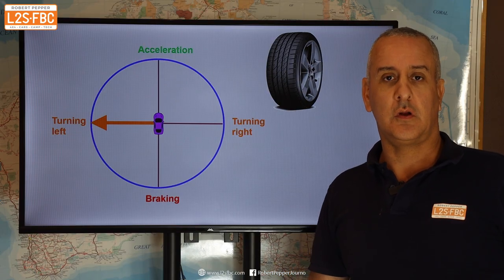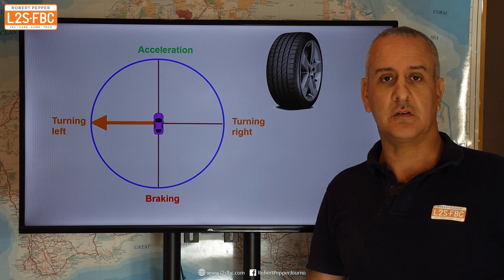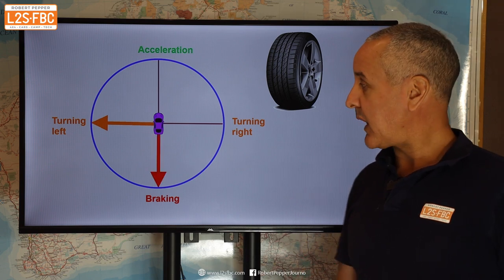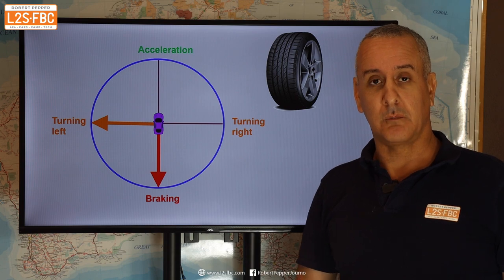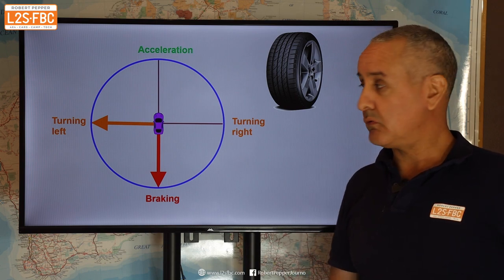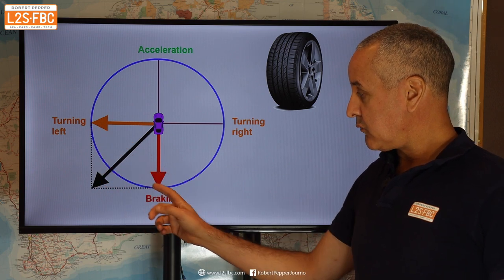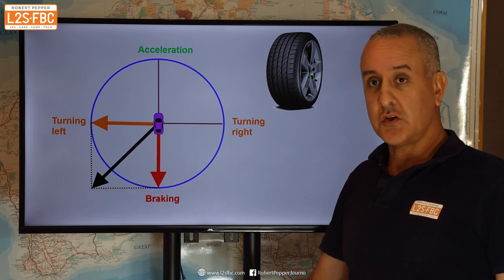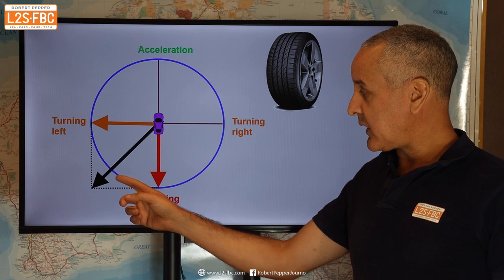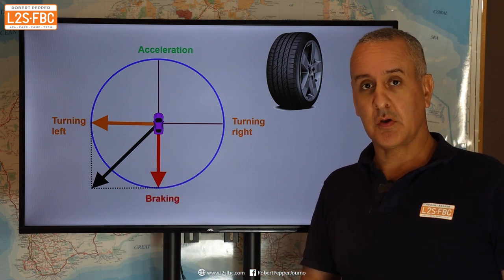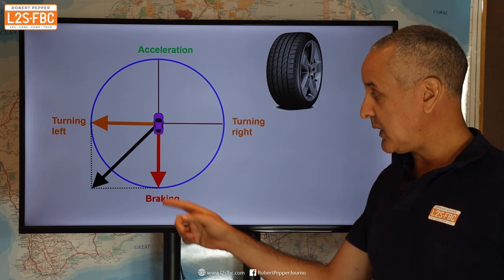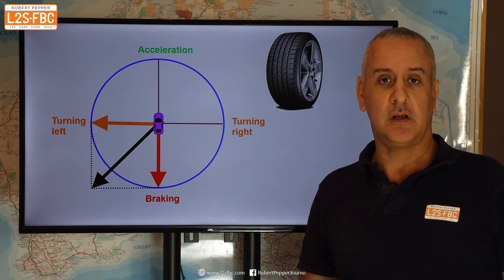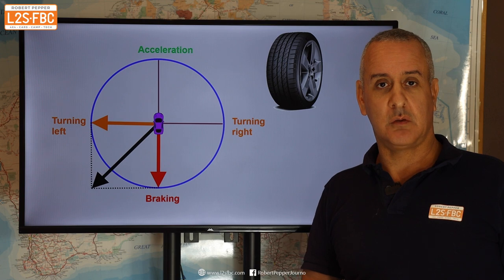What if we wanted to turn as well as brake at the same time? We're using all of the tyre's traction for turning left and now we're going to try and brake to the maximum as well. The circle of traction resolves that — we create a right angle and draw a line from the centre of the circle, and we find that the black arrow representing the grip required actually exceeds the grip available.